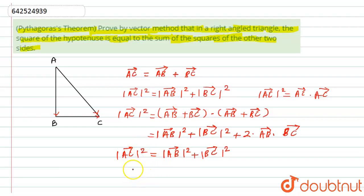And hence it is proved that the hypotenuse of any triangle squared is nothing but equal to the sum of the other two sides squared, that is AB squared plus BC squared. And hence this is proved. I hope you will like the solution. Thank you.